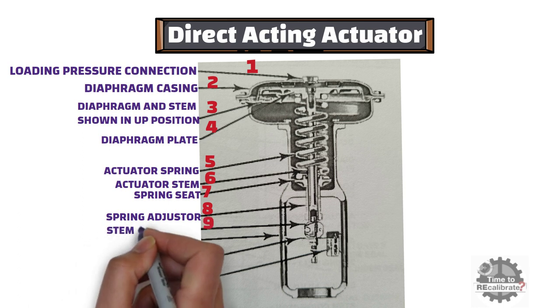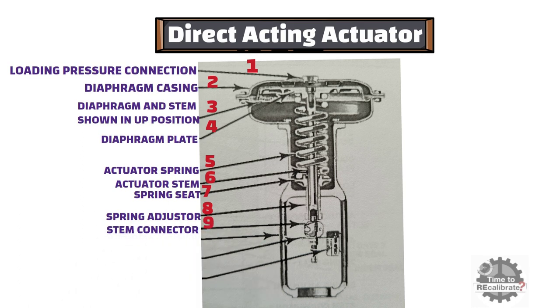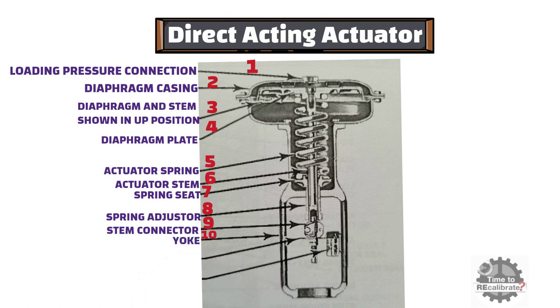Ninth number part is stem connector. Tenth number part is yoke. Eleventh number part is travel indicator. And twelfth number part is indicator scale.